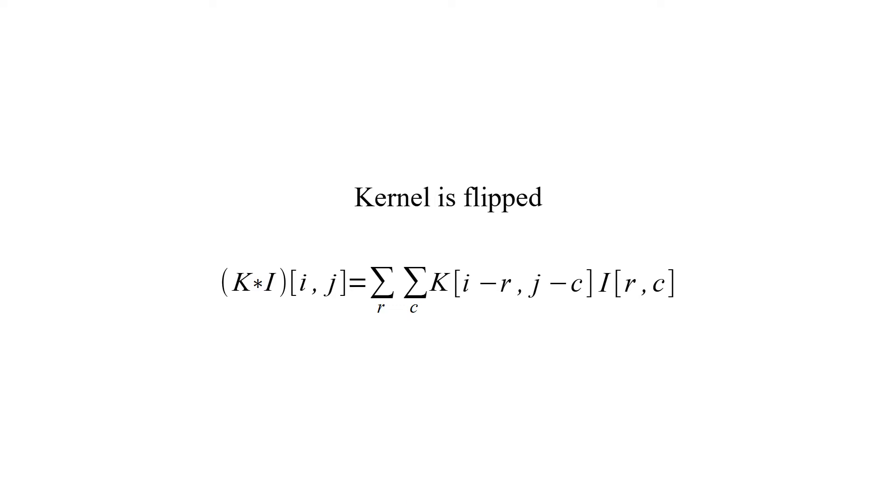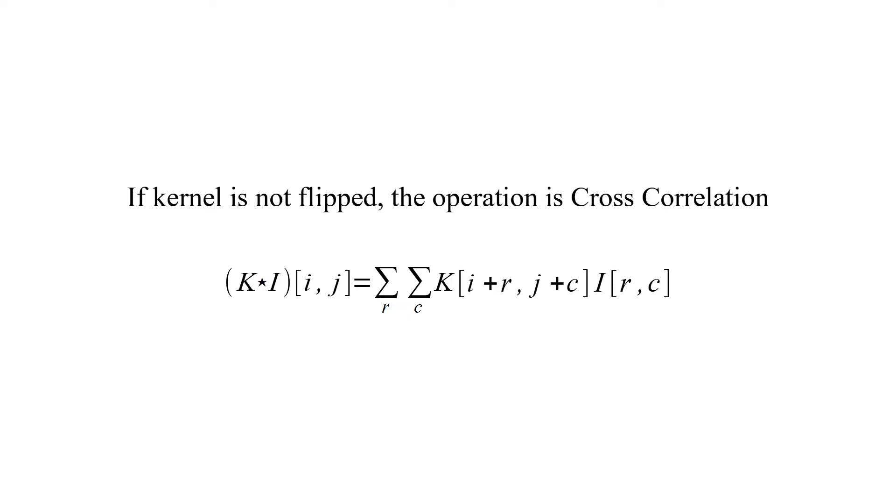Kernel is flipped. If kernel is not flipped the operation is cross correlation.